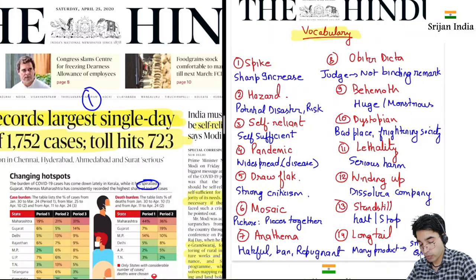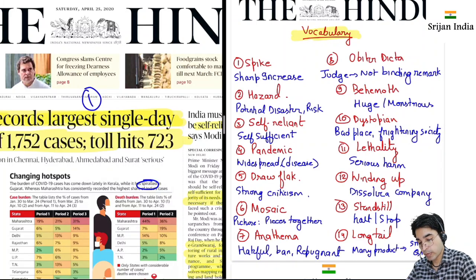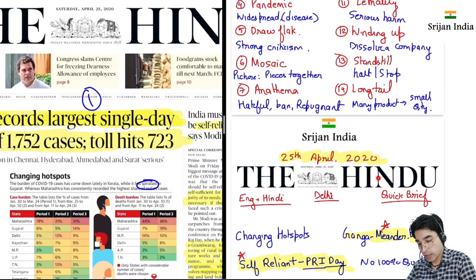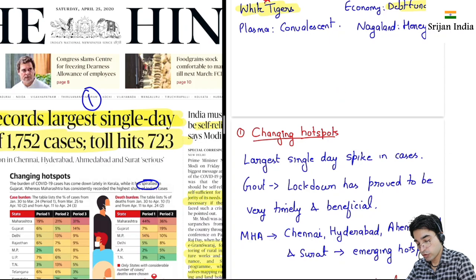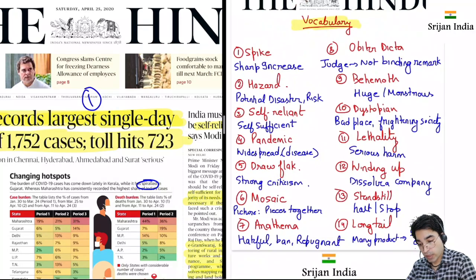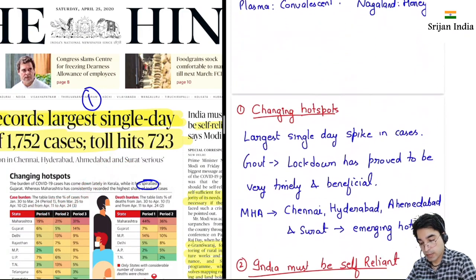Long tail bhi ek business/product mein ek term hota hai, product manufacturing aur marketing mein. Iska matlab hota hai koi ek bahut zyada successful product hone ke bajaaye, bahut sare chote chote products hai, small quantity mein sab sale ho rahi hai — that is called long tail. Vocabulary mein if you come across any other important word, write down that word along with its meaning. So let us start.